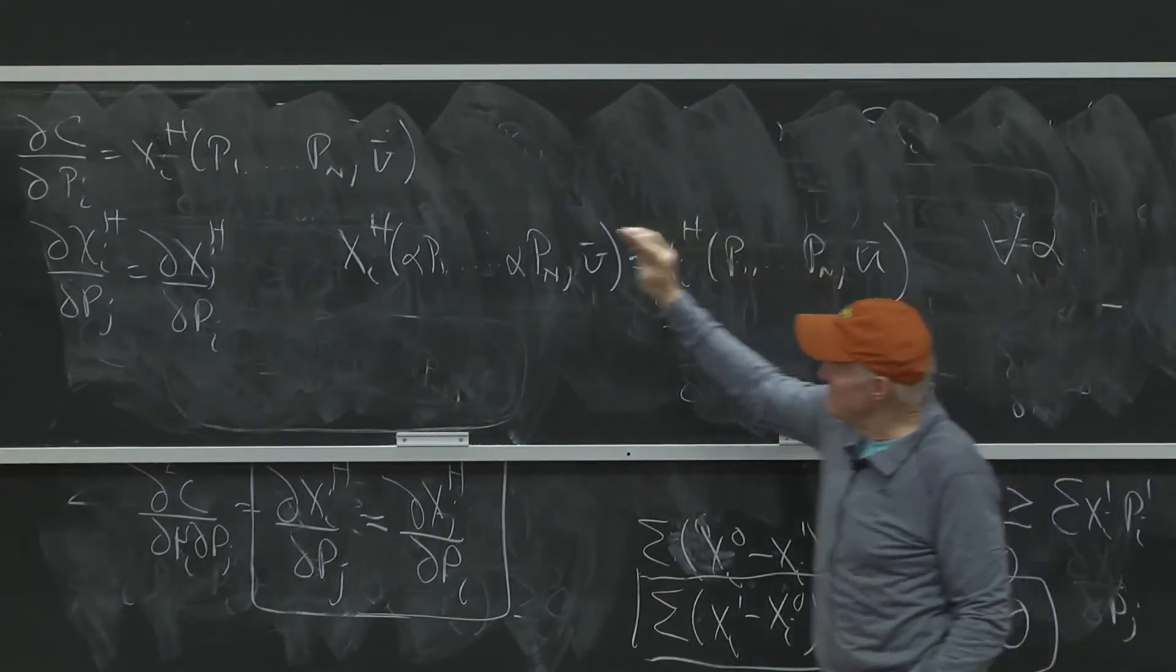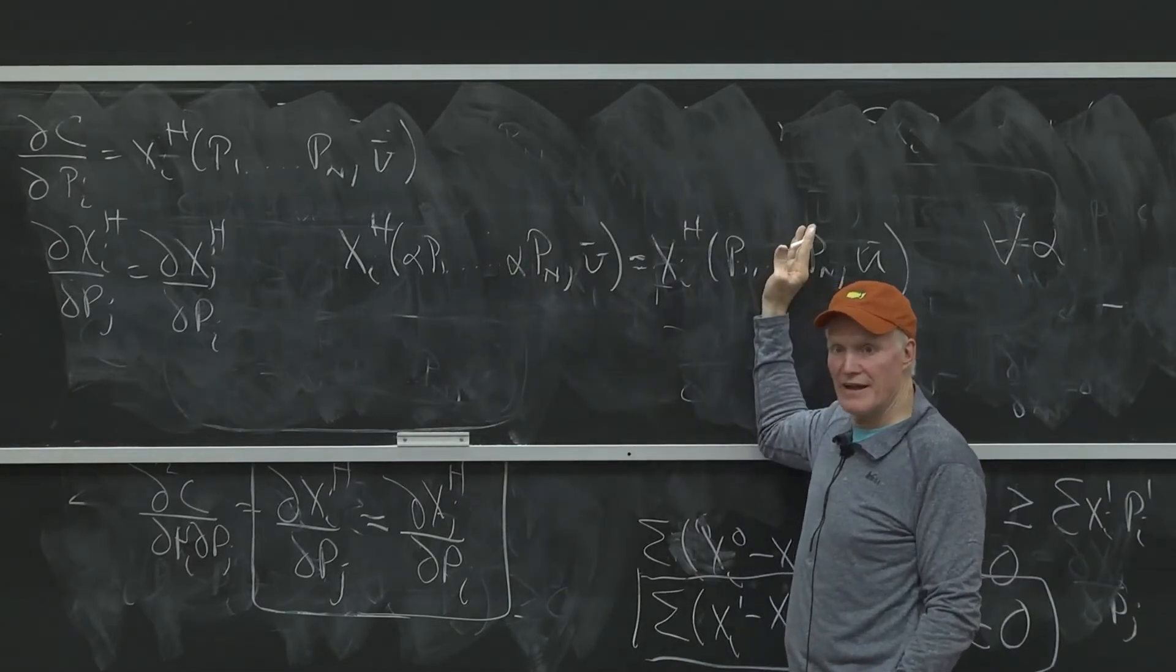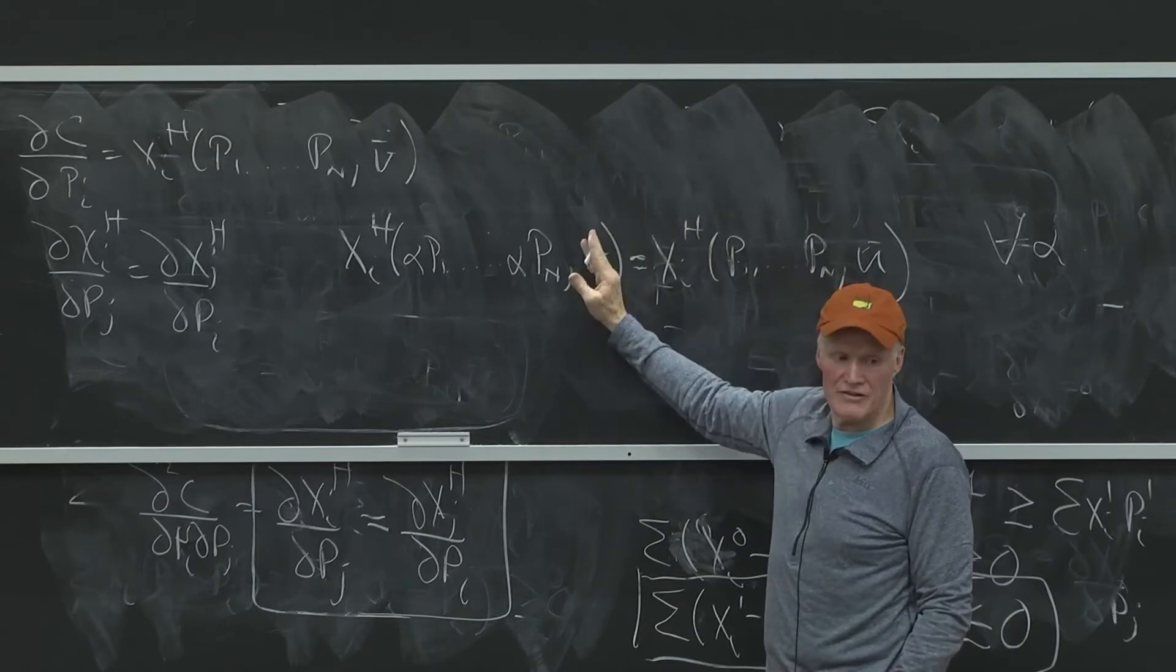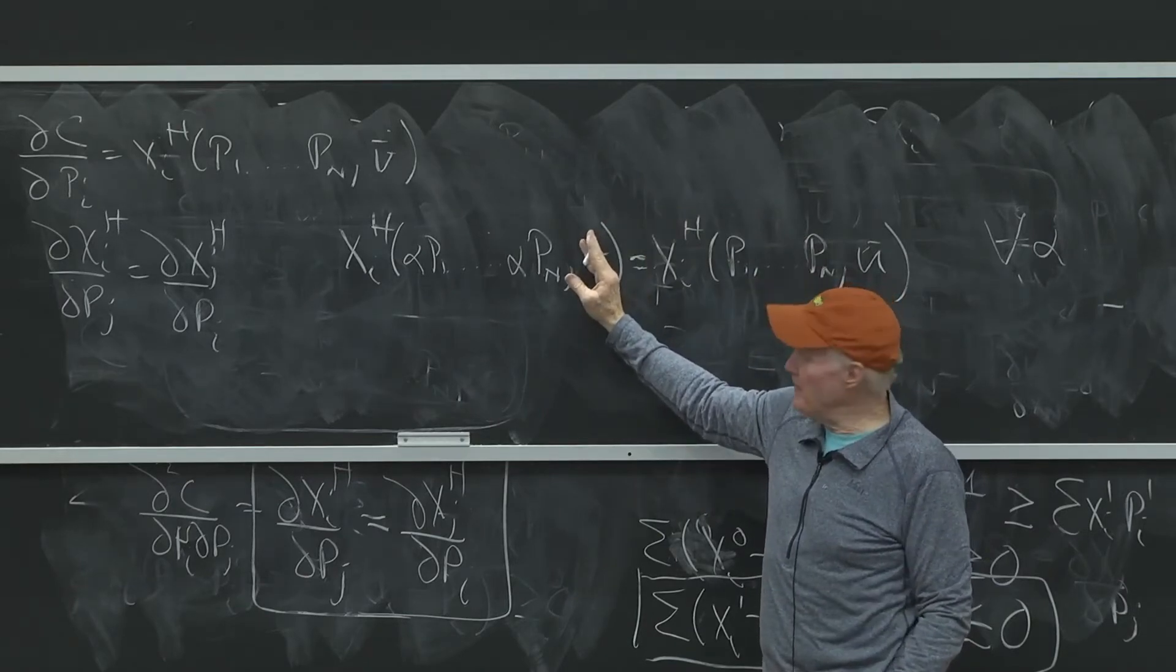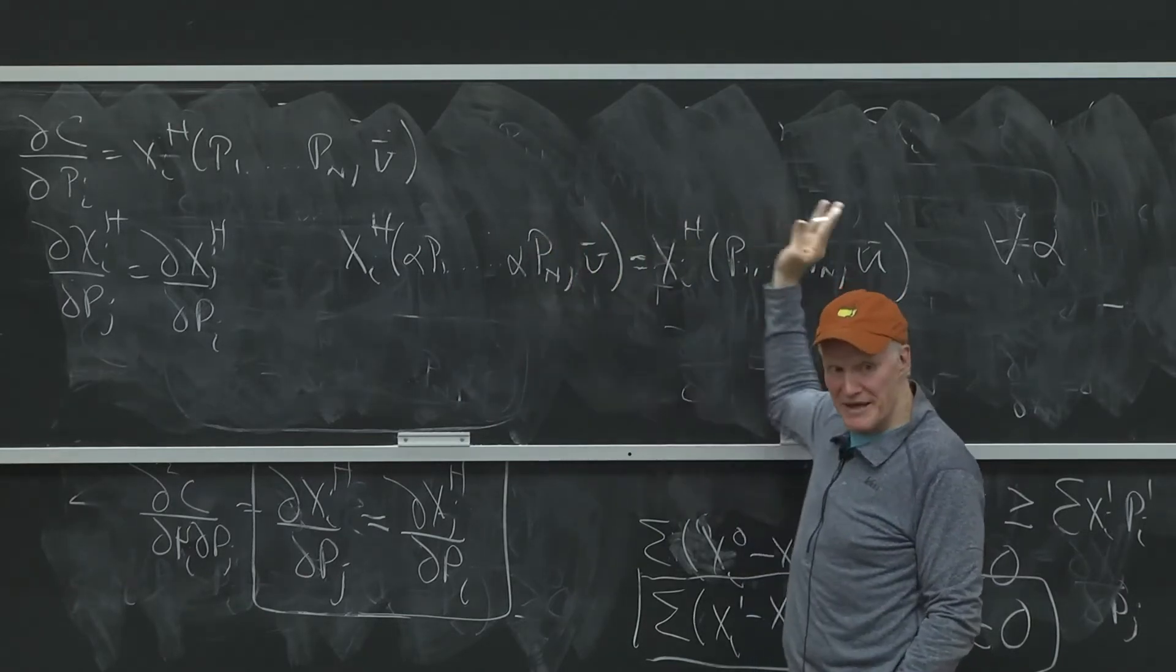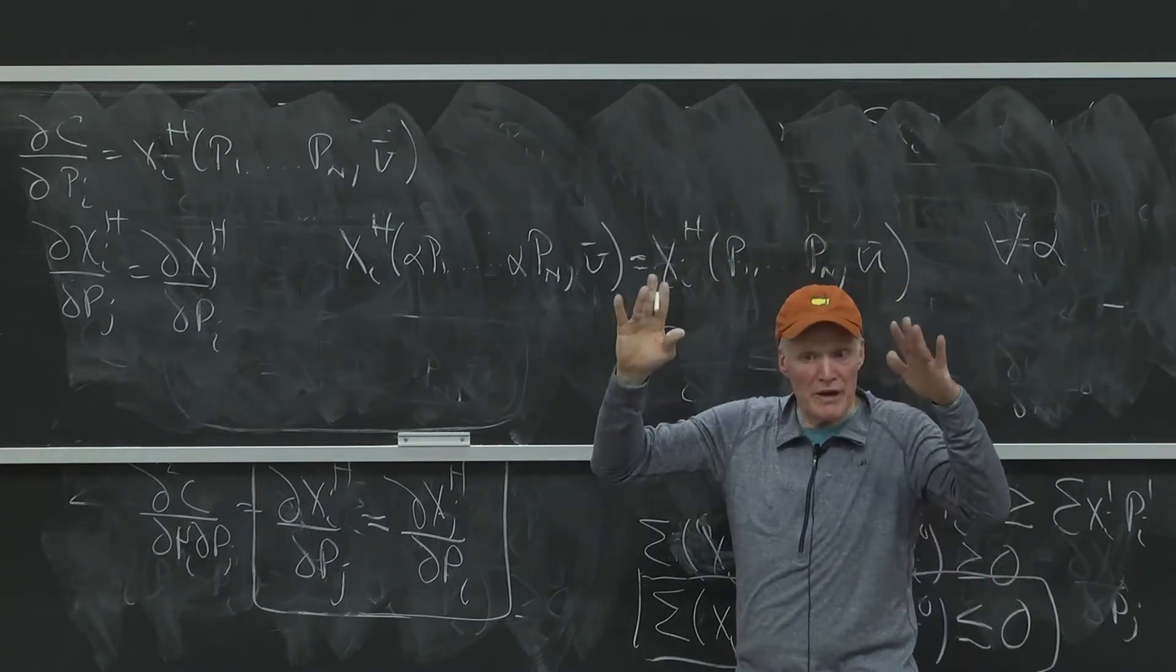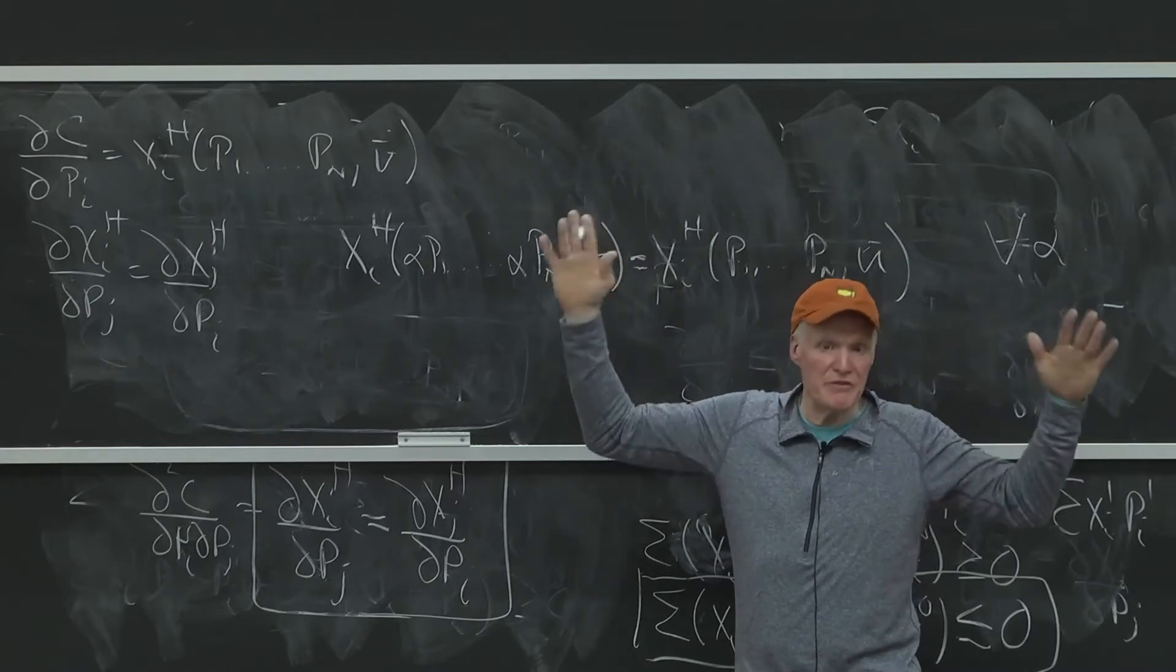If this side is equal to this side as a function of alpha, then the derivative of this side has to be equal to the derivative of that side. If I have two functions that are equal at every point, their derivatives are equal.